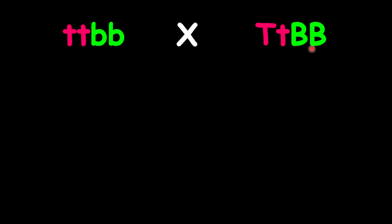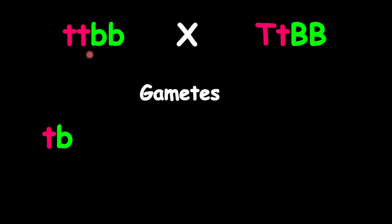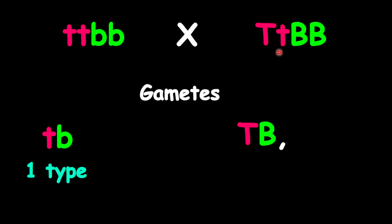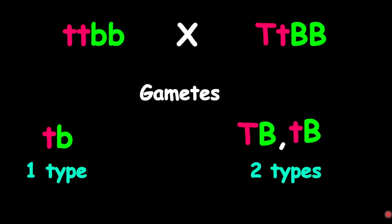Let's jump into another example. One parent is homozygous recessive for both traits, and the next parent is heterozygous for one trait but homozygous dominant for the other trait. For the first parent, the possible gametes will be only lowercase T with lowercase B — that's the only possibility, so we have one type of gamete. For the second parent, we could have either uppercase T with uppercase B or lowercase T with uppercase B, so we have two types of gametes. This is a one-by-two, so it is only two boxes in our Punnett Square.